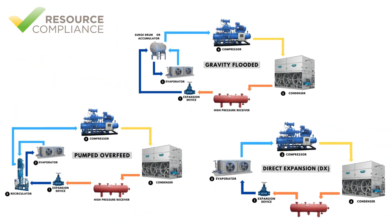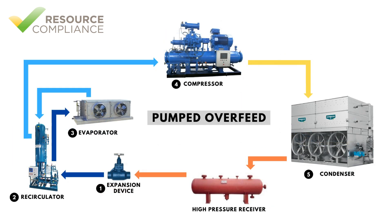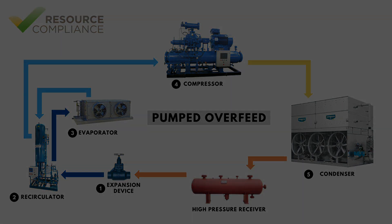As with the DX and flooded systems, the liquid will boil inside the evaporator. Vapor formed in the evaporator is returned to the recirculator, where it is separated from the liquid and rises to the top of the vessel. The vapor from the recirculator is piped to the suction inlet of the compressor.